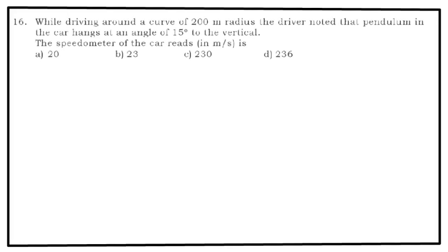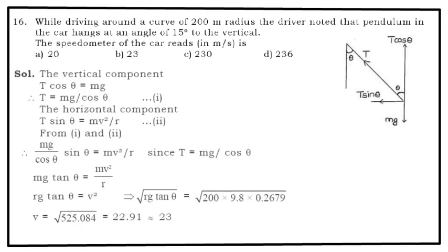While driving around a curve of 200 meter radius, the driver noted that the pendulum in the car hangs at an angle of 15 degrees with the vertical. The speedometer of the car reads in meter per seconds. Options are there in front of you. Let's see. At any position of the pendulum, there are two basic forces acting on the body: Mg vertically downwards, and tension in the string along the string away from the body. Now resolve T into two components: T cos θ and T sin θ.